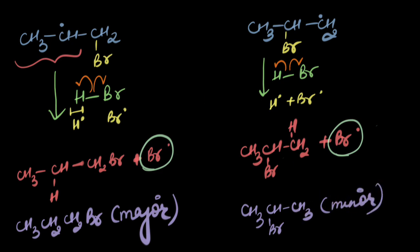So this major product is not the one that we got when we reacted alkene with HBr. This product is called anti-Markonikov product. The one where bromine attaches itself to the less substituted carbon.